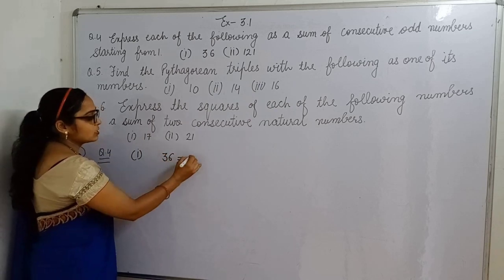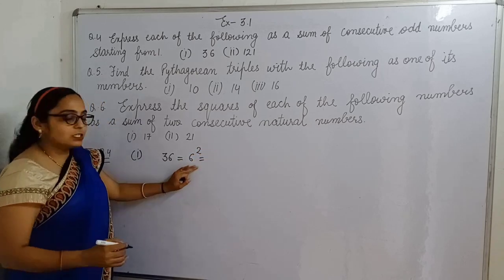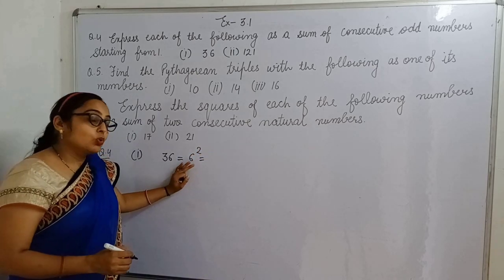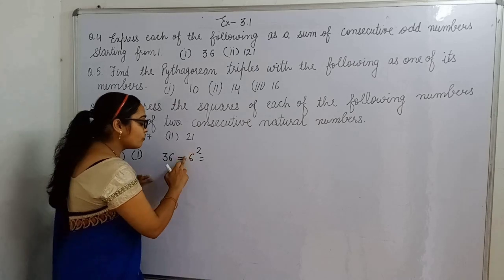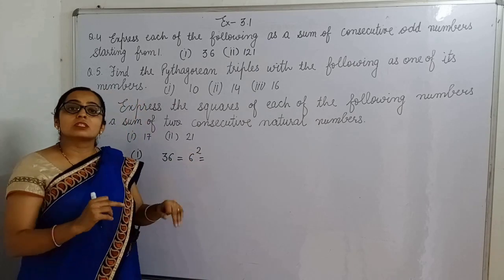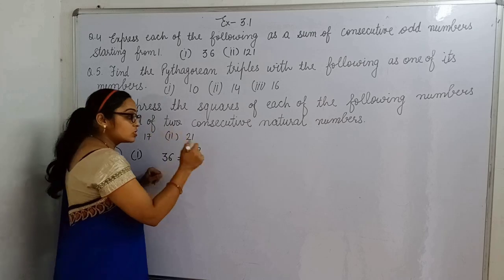Which number square is this? Six square, it is the square of six. So, what do you have to write here? First six odd numbers, first six.